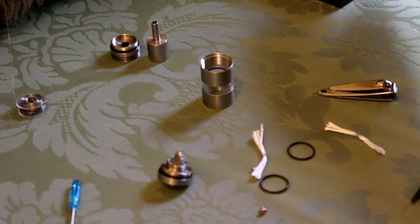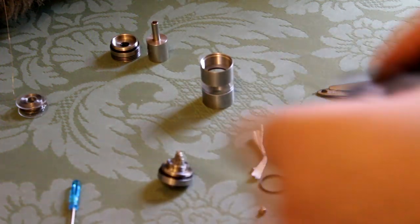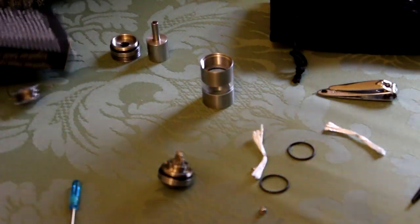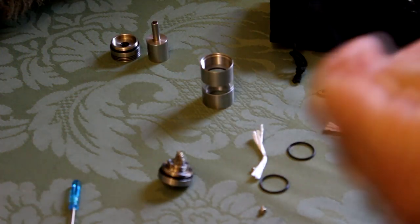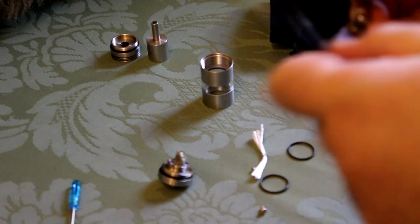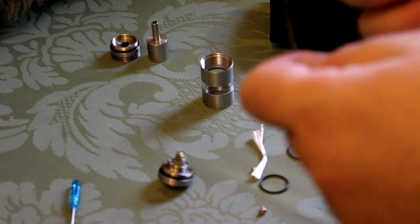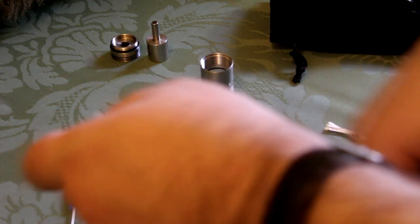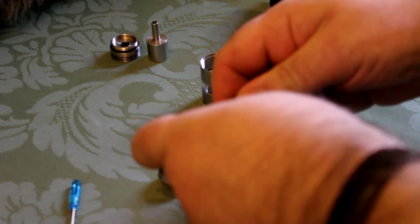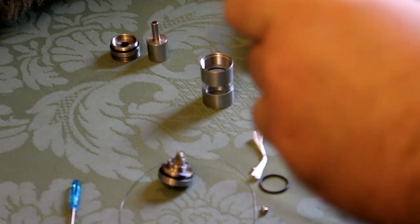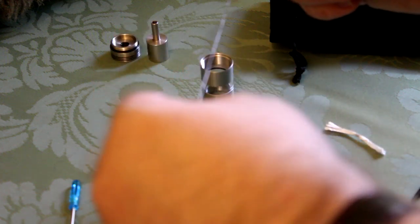I'll build one for you, show you how I wick it, and then come back. So what we're going to do is put a couple of coils in this. I'm going to use 28 gauge kanthal, I'll do eight wraps on each.